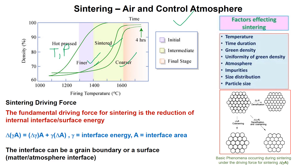The fundamental driving force for sintering is the reduction of internal interface surface energy. If gamma is interface energy and A is interface area, the cumulative process can be split into two parts: densification is associated with one part, and coarsening with the other. In actuality, sintering follows both simultaneously as densification and coarsening. The interface can be a grain boundary or a surface — a matter/atmosphere interface. Densification and coarsening both result from the same starting particles but diverge in outcome.